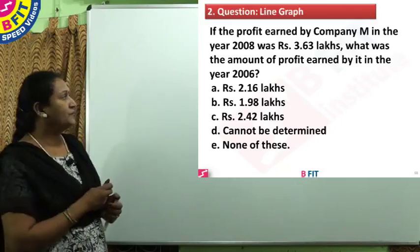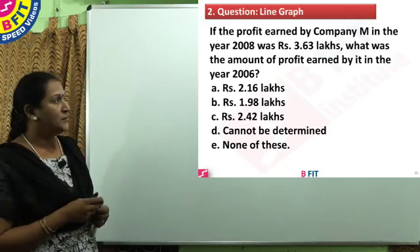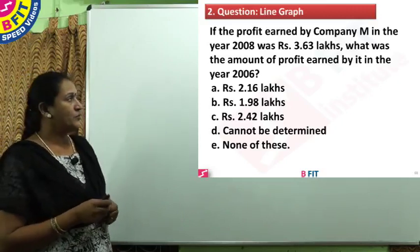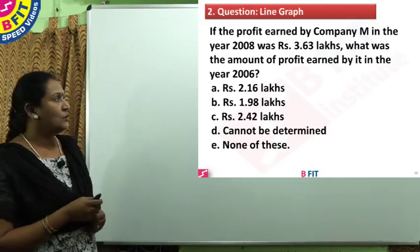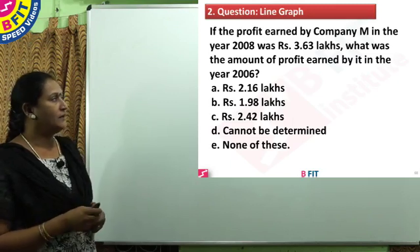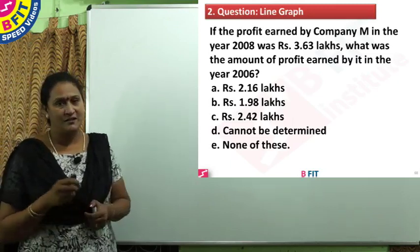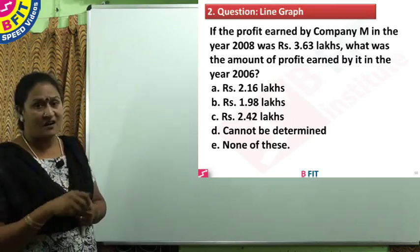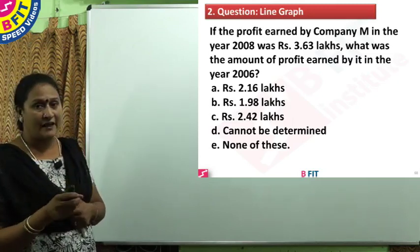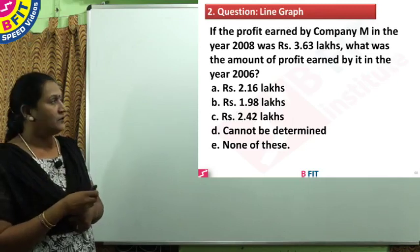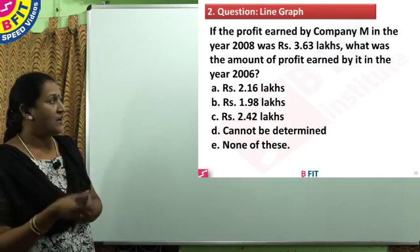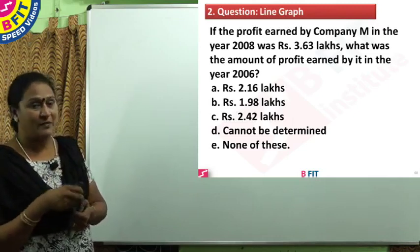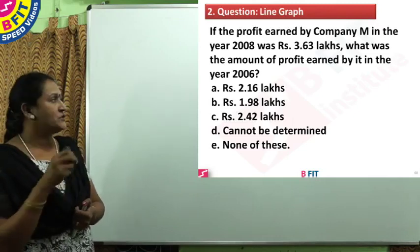The second question is: if the profit earned by company M in the year 2008 was Rs. 3.63 lakhs, what was the amount of profit earned by it in the year 2006? This question is a reverse working problem because after the increase, 2008's profit is given as Rs. 3.63 lakhs. We are asked to find the initial value in 2006, two years back.